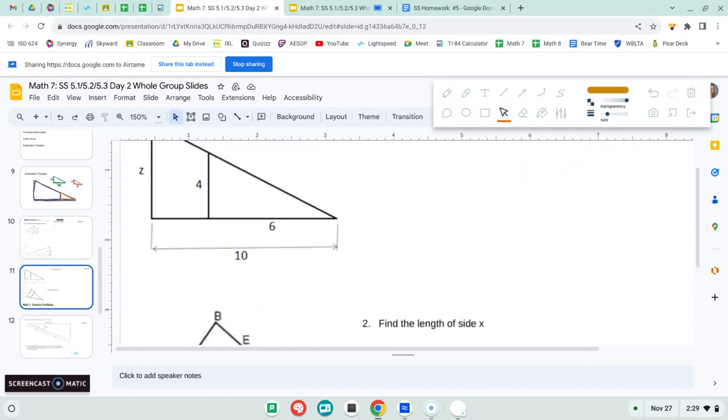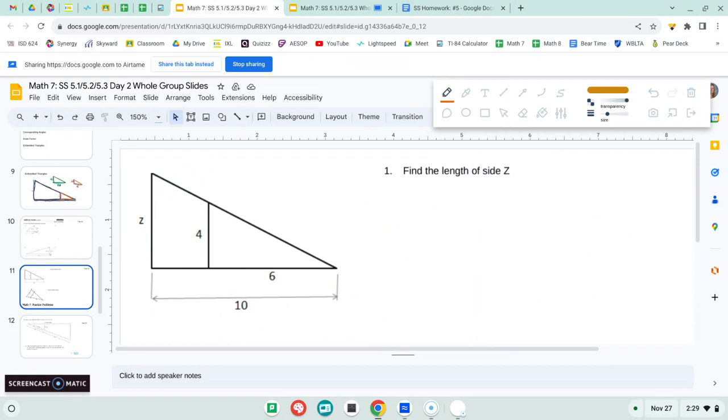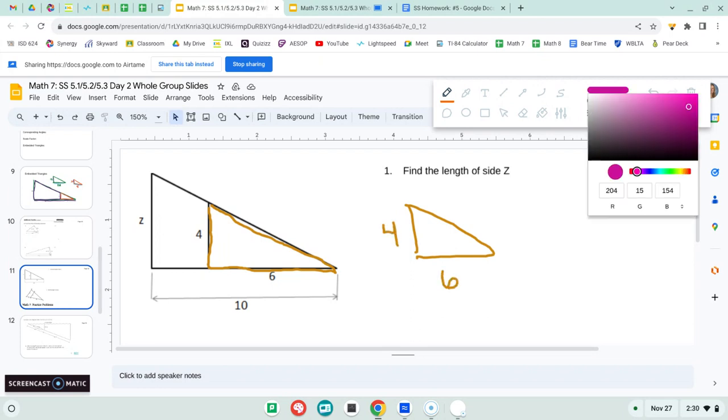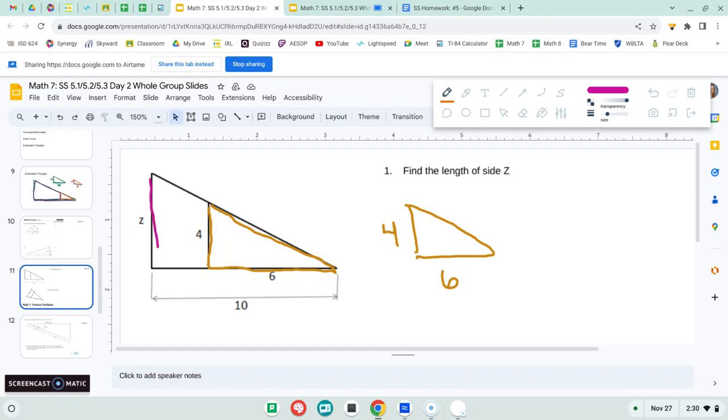So on the next page, we have a different type of embedded triangle here, but we're still going to take the two triangles apart. So we have this piece. So I'm going to draw it here, four and six. And then we have our bigger triangle, Z and 10. And I'm going to draw that off to the side. So I have Z here and 10 here.